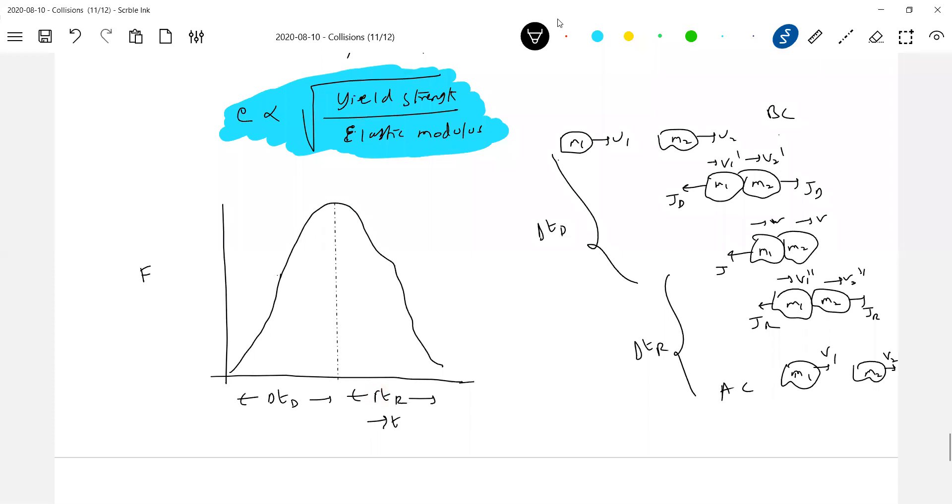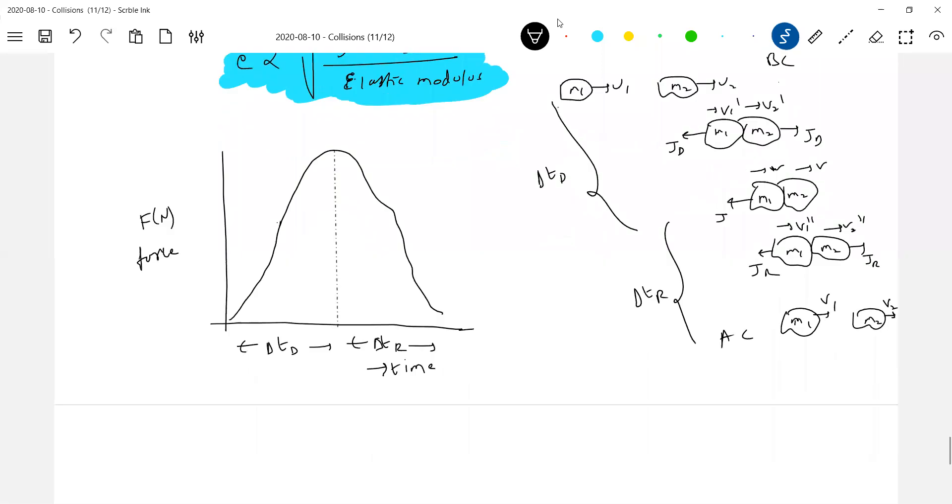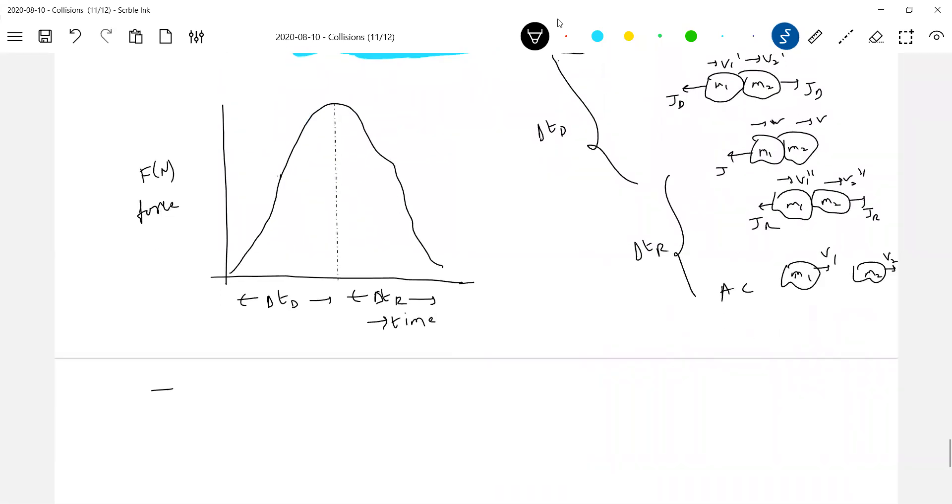Let's go back to the definition of impulse. What is impulse? Force into time. So area under Ft graph, what will it give? Impulse. Because what is the basic definition? Impulse equals integral of F dt. This should equal change in momentum.